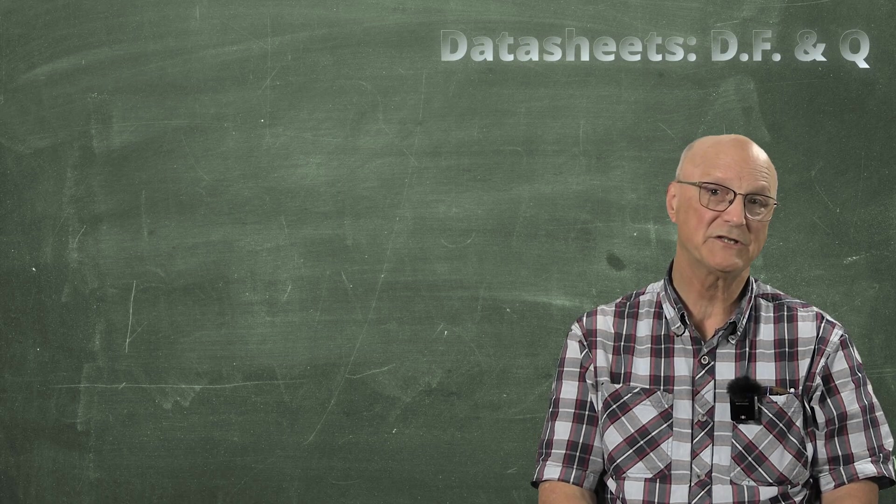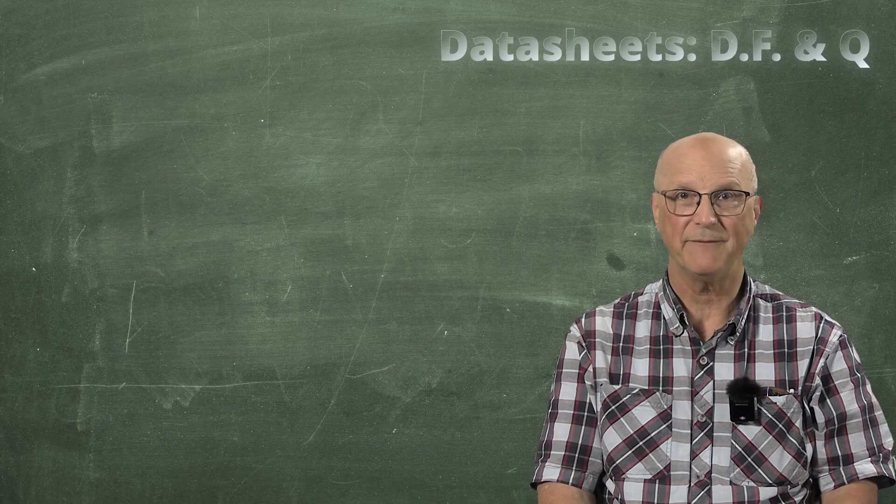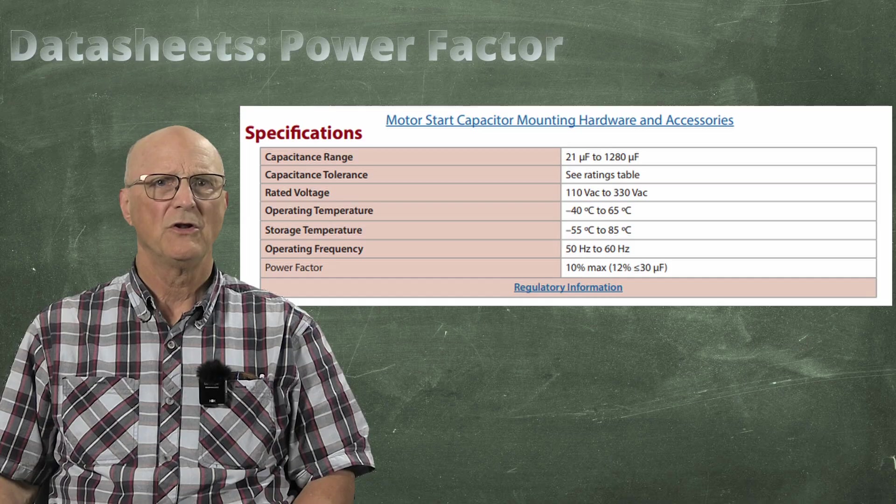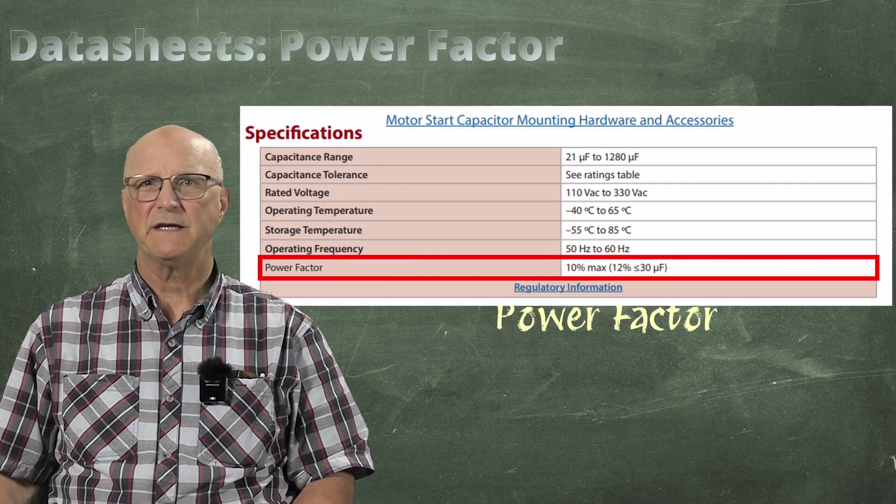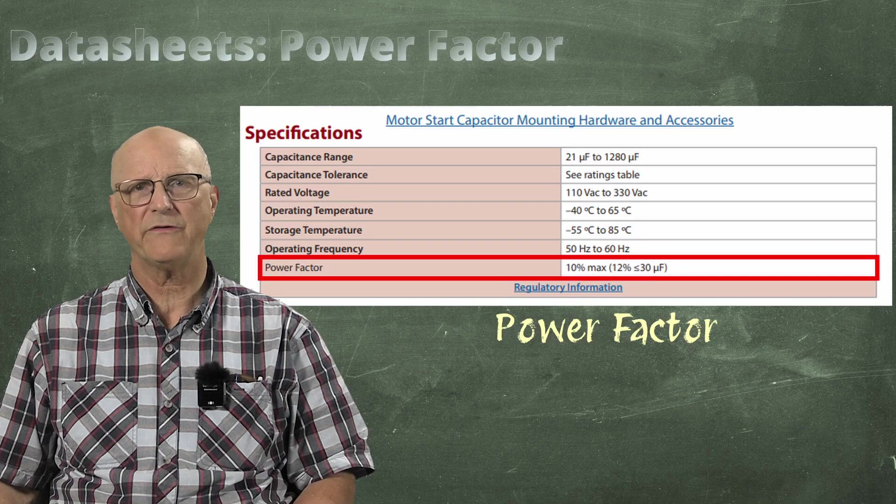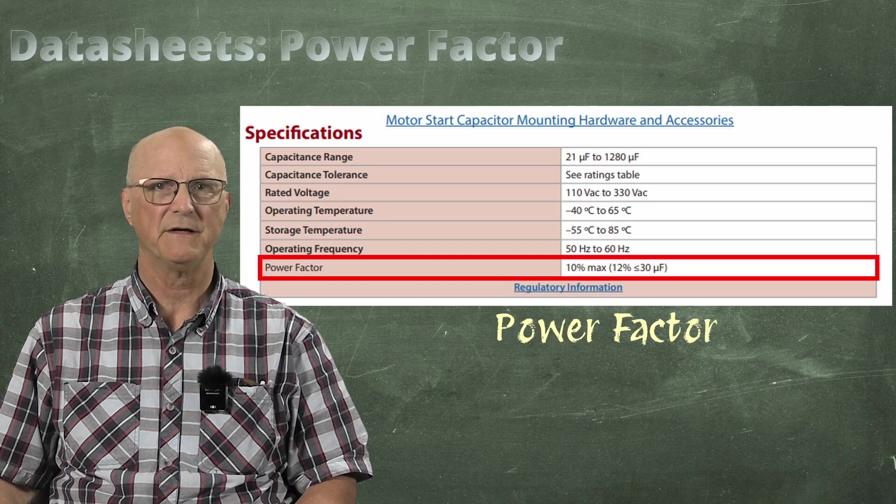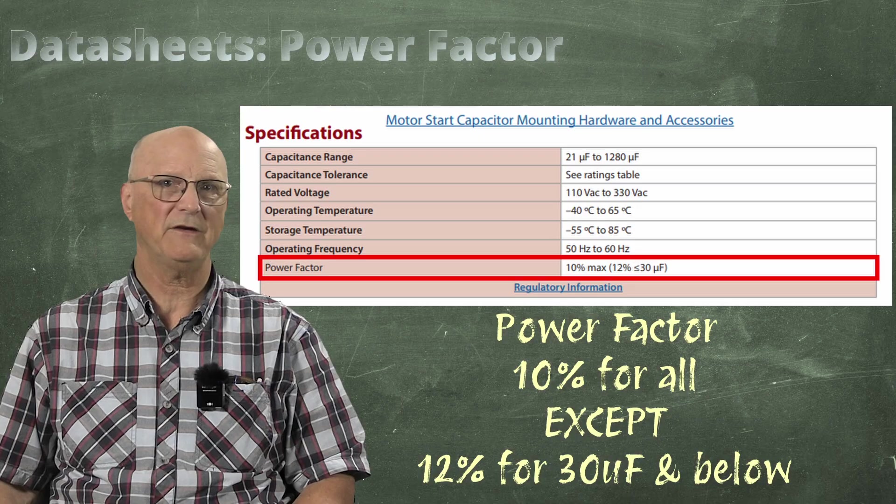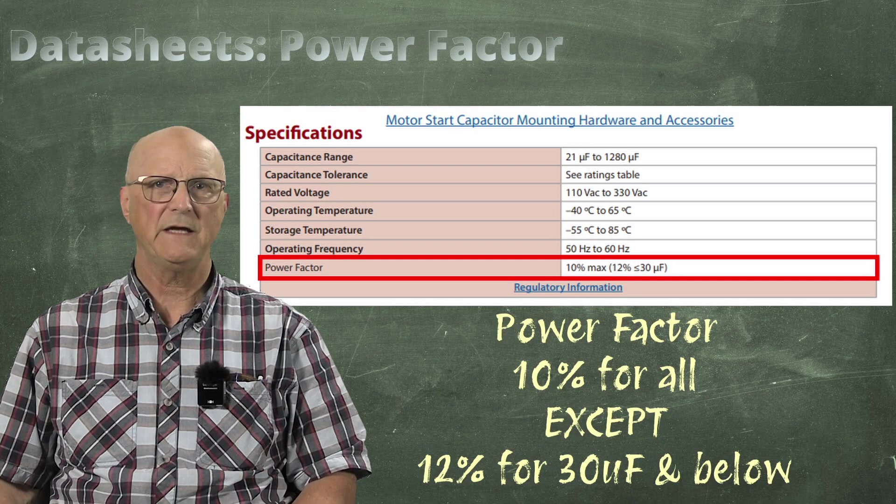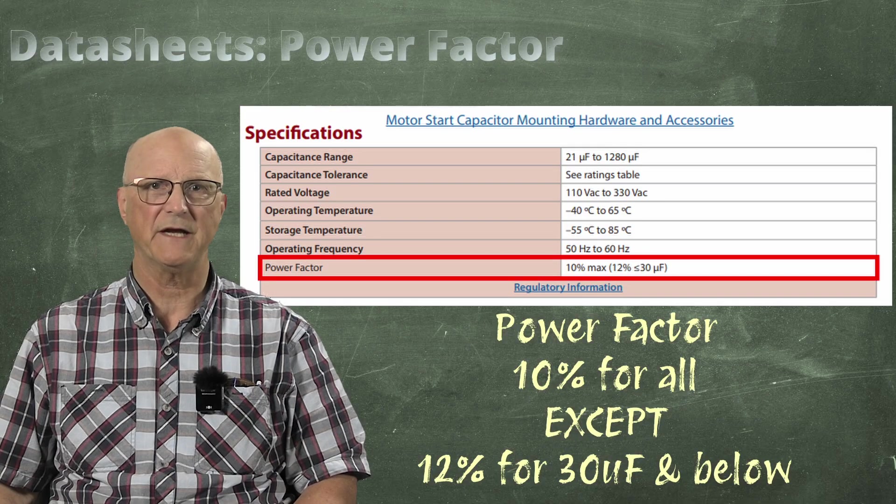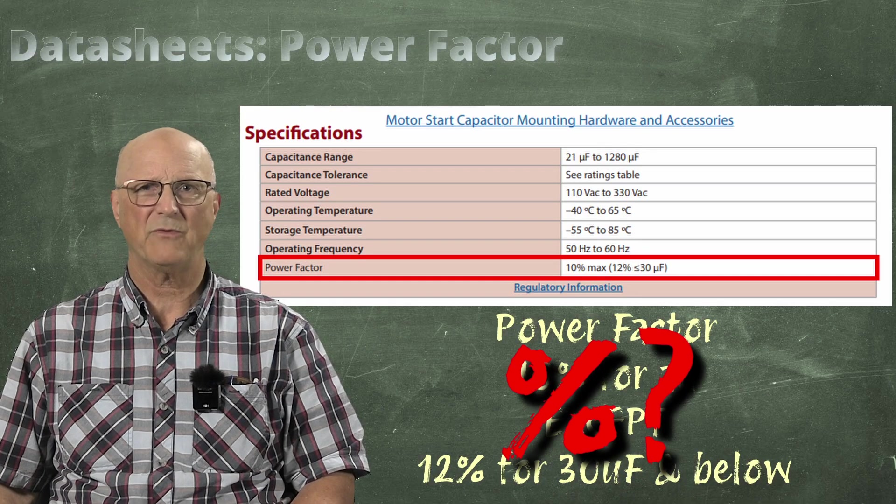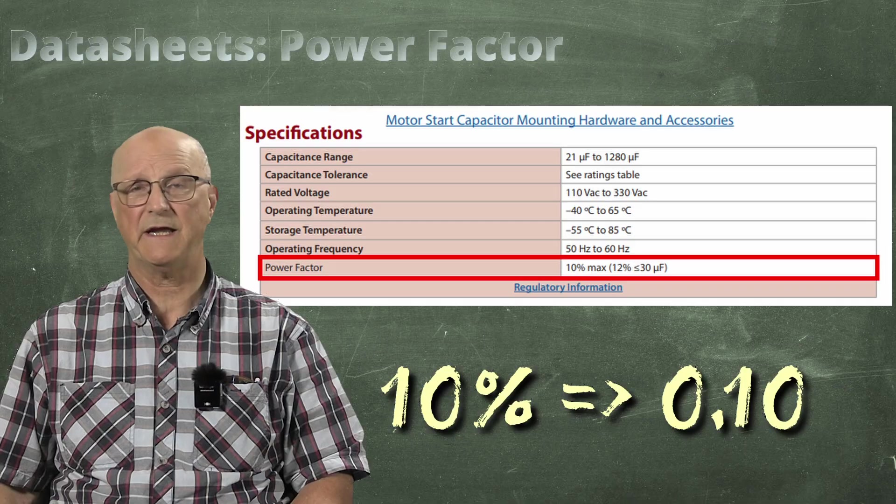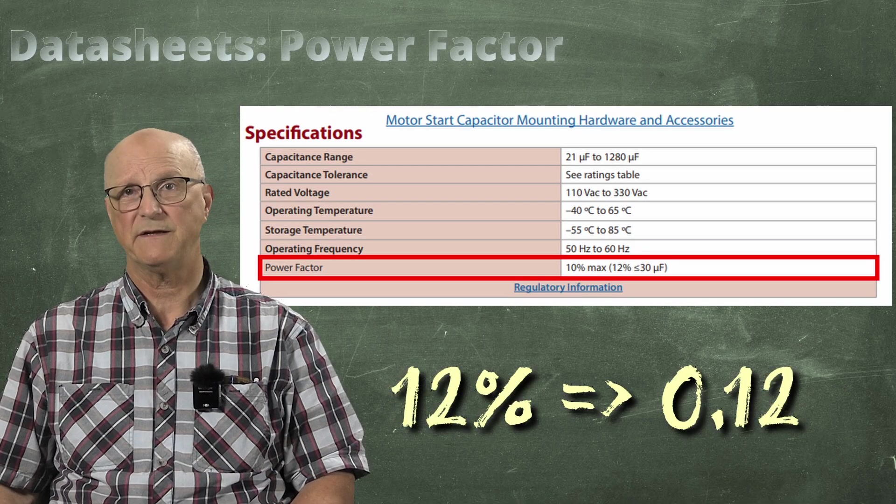So, now let's just take a look at one more datasheet with the power factor in mind this time. Here I have an excerpt from the datasheet of a motor start capacitor. Look at the last specification. It is a general specification for all of the capacitors represented in this datasheet of 10% maximum power factor except on capacitors of less than or equal to 30 microfarad. These would have a maximum power factor of 12%. So, what do they mean by percent when power factor is the cosine of an angle? Well, 10% is just another way of saying 0.1 and 12% is 0.12.